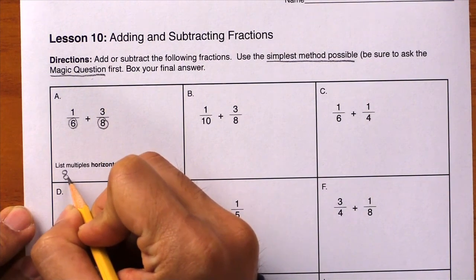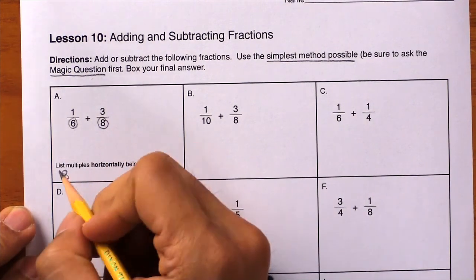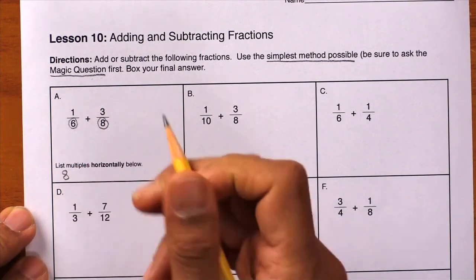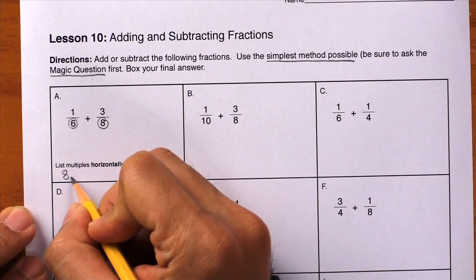Here's eight, and stop. Can you do eight divided by six evenly? The answer is no, so we have to keep going. Keep counting by eight, and next is sixteen.